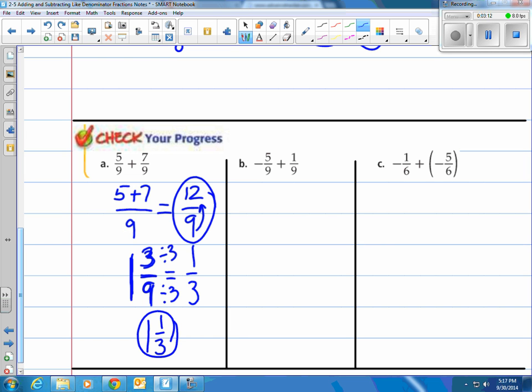B, I've got negative 5 ninths plus 1 ninths. I've told you, you want to put the negative on the top. So really, I'm going to rewrite the problem like this. Then I'm going to combine those numbers on top. Negative 5 plus 1. And negative 5 plus 1 is negative 4. So it's negative 4 over 9.